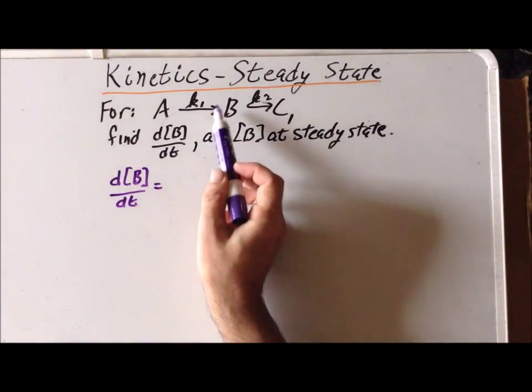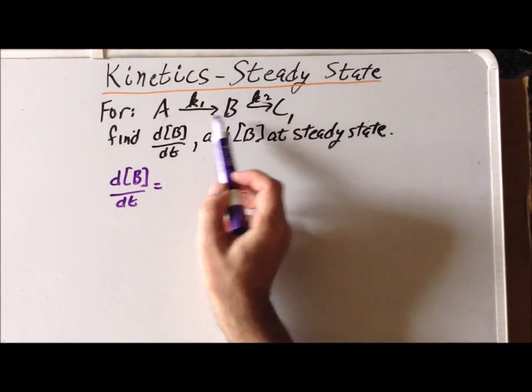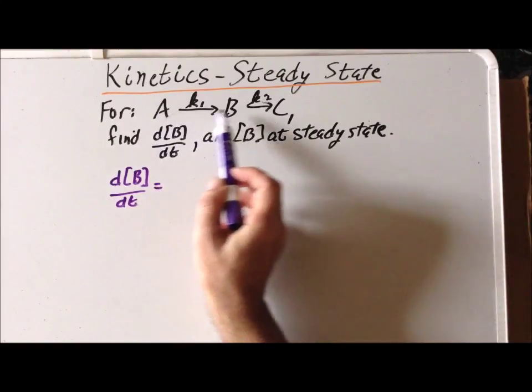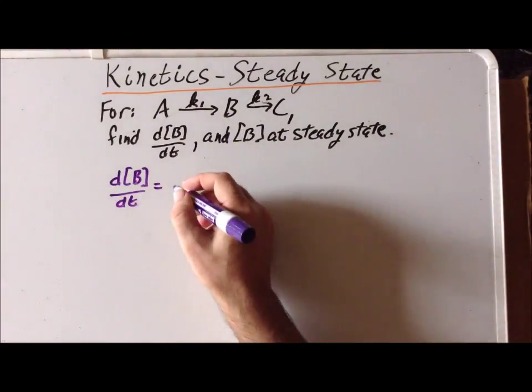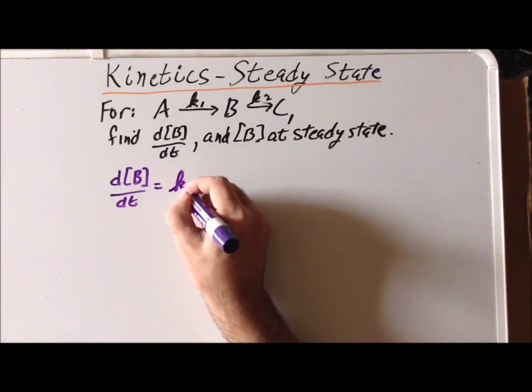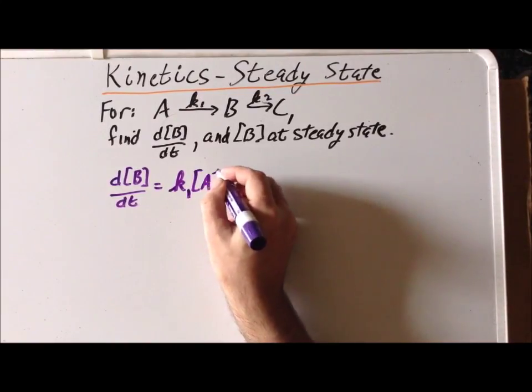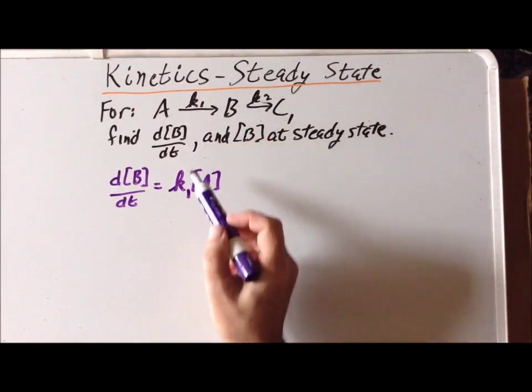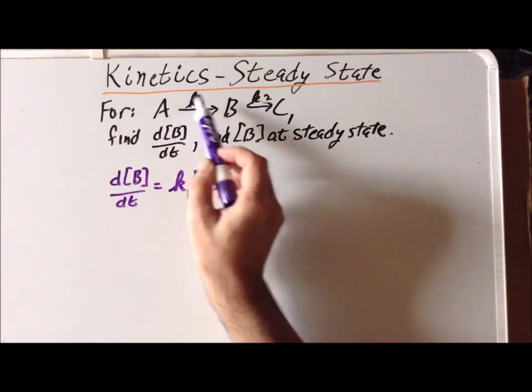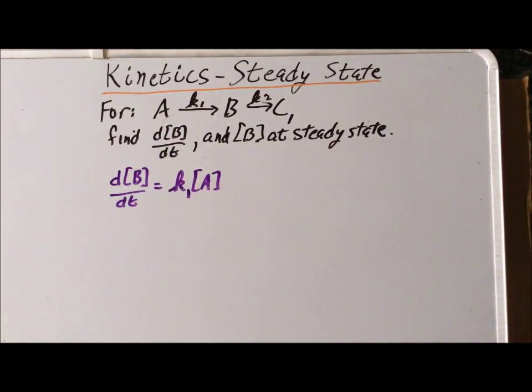One is that the concentration of B increases as A is converted to B, and the rate of that is equal to K1 times A. So the rate of formation of B is equal to the constant K1 times the concentration of A.